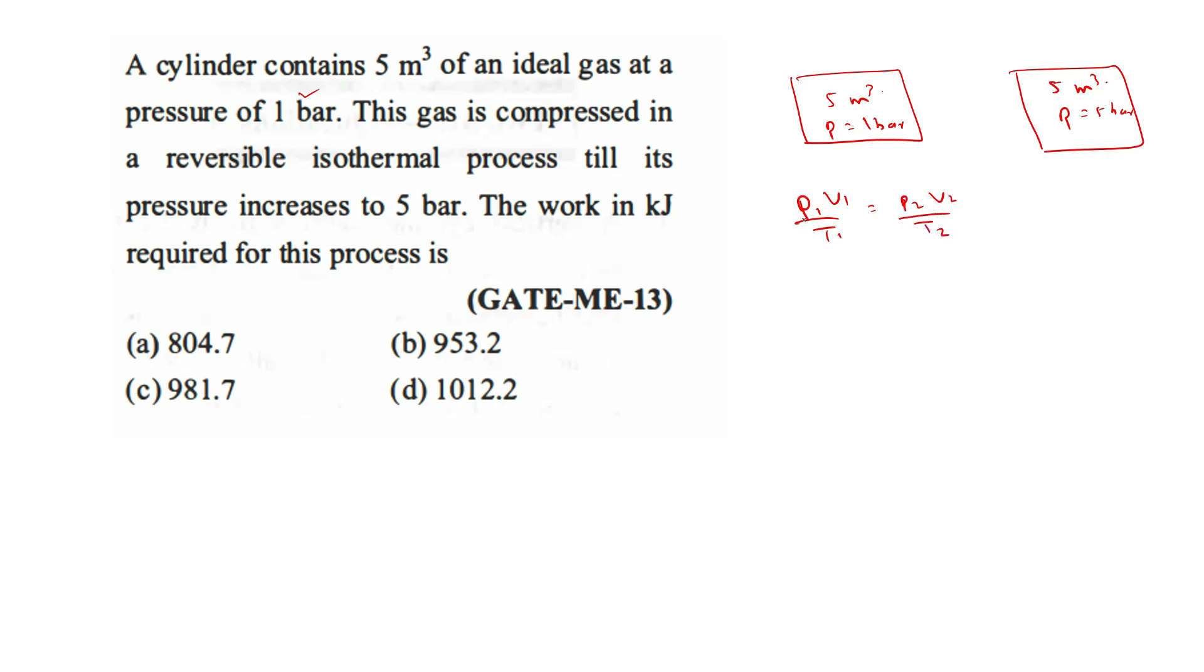Volume constant you can write 1 by T1 is equal to P2 times 5 by T2. So T2 by T1 is equal to 5.